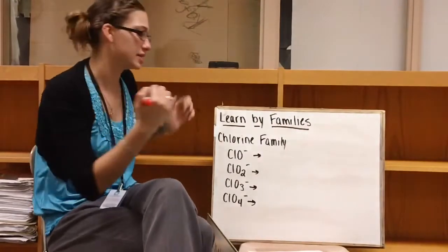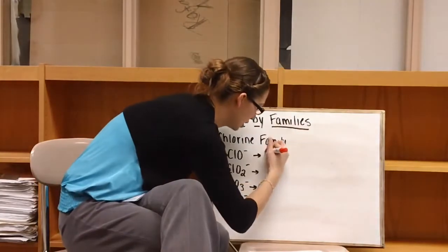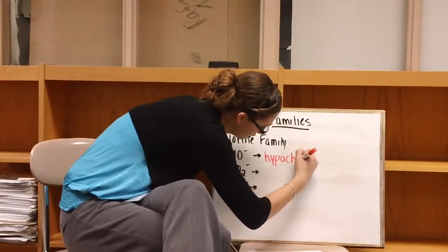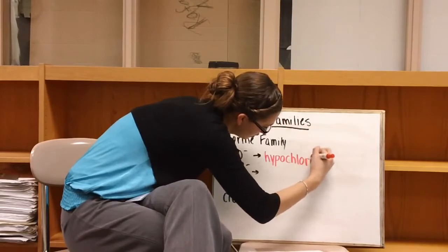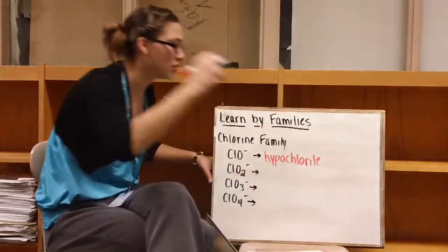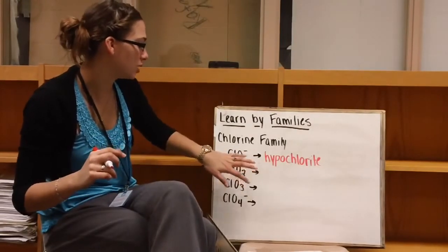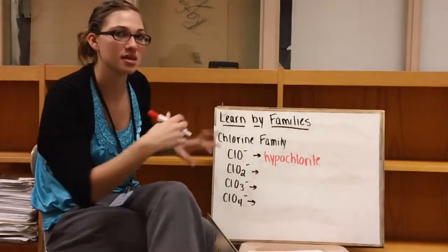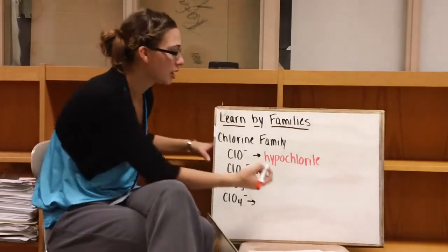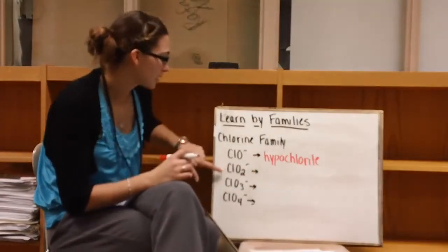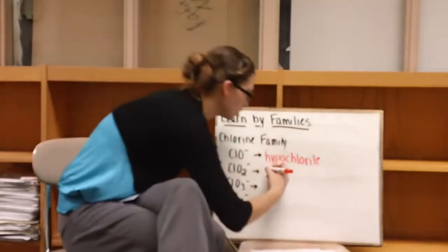So one example of a family is the chlorine family. So ClO- is going to be hypochlorite. So hypo, meaning that there's only one, so there's less oxygens than normally are. And then chlorite, because we're in our chlorine family.